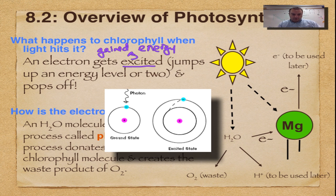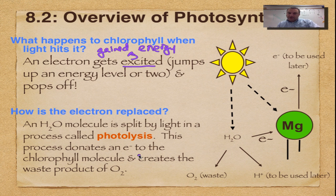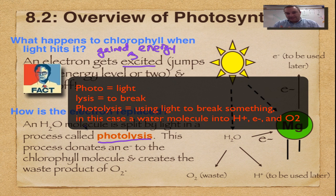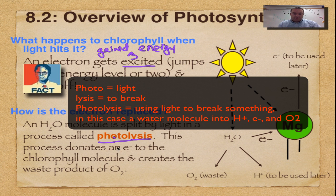We need to replace this electron back to the chlorophyll or photosynthesis is going to stop. That's going to be done through a process called photolysis. Photolysis comes from the word photo, which means light, and the word lysis, which means to break down. So what you're doing in photolysis is using light to break a water molecule.